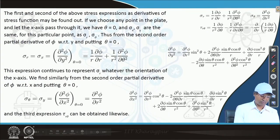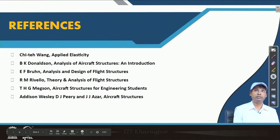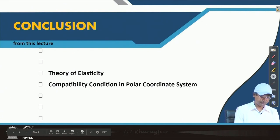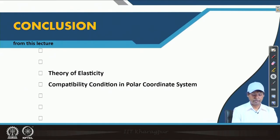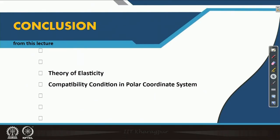With this derivation, we come to the end of today's lecture. In conclusion, we have learned the compatibility condition in polar coordinate system, and we will further use polar coordinates to find out stress distribution around a hole. In the next lecture, we will start the problem of a circular hole in a plate under uniform tension. Thank you.